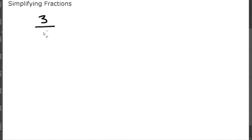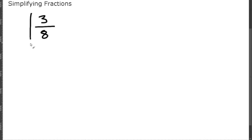Let's say I give you three-eighths. Let's simplify three-eighths. We know that one goes into both, but that would still be three-eighths. How about two? Two doesn't go into three evenly, but it goes into eight evenly — but we can't do that, because whatever we do to the top, we have to do to the bottom. So, let's try three. Three goes into three evenly, but does three go into eight evenly? No. And three is as big as we can get to divide the numerator by. So, three-eighths is already in its simplest form.